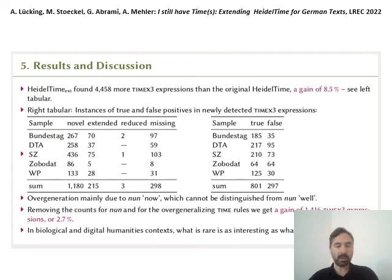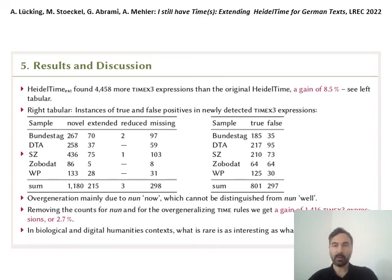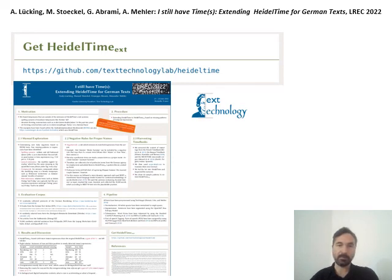Given that we are interested in detecting as many temporal expressions as possible — which is often the case in our context — and that in digital humanities contexts rare occurrences are also of interest, this extension is still a worthwhile contribution. You can obtain the HeidelTime extension from the Text Technology Labs GitHub repository. If you have further questions, please come to the poster presentation. Bye then!